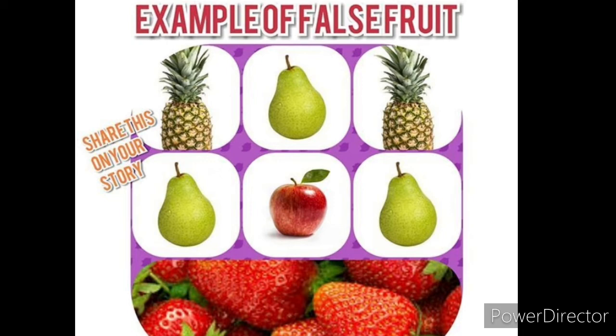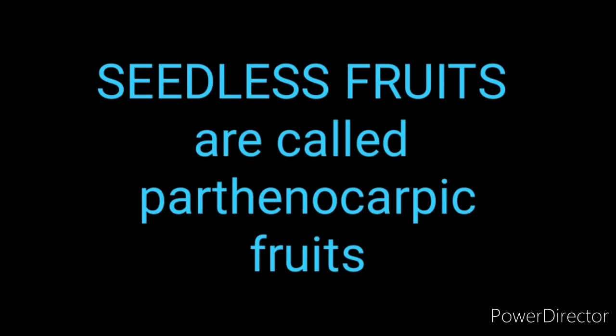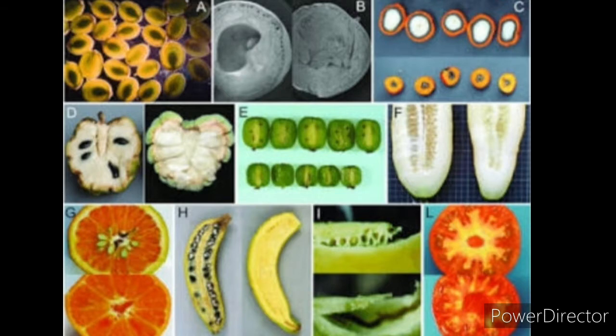Some fruits develop without fertilization. Fruits developed without fertilization are called parthenocarpic fruits. Examples include banana and seedless grapes. These are seedless fruits and are examples of parthenocarpy.